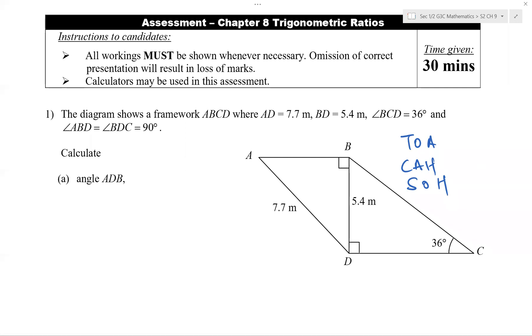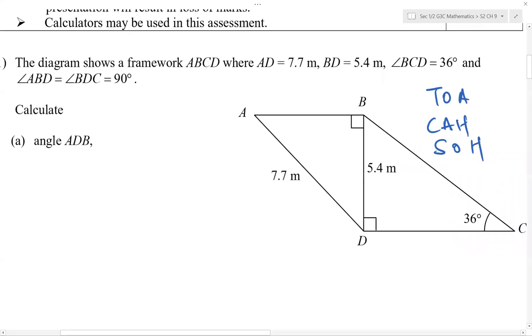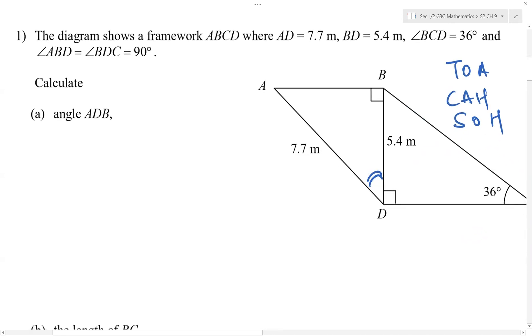So first, to calculate angle ADB. This is the angle that I want to find out. I can see that I have two sides. These two sides, they have names. They are, first, the hypotenuse, as well as, this is our adjacent.